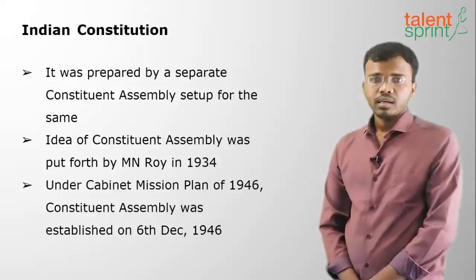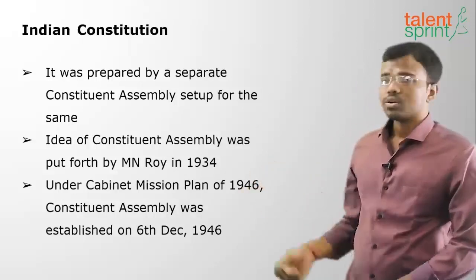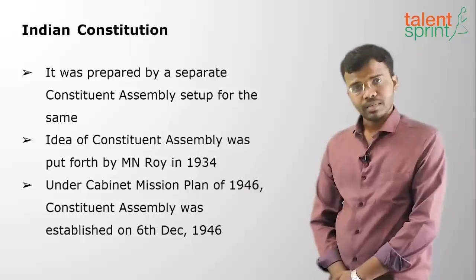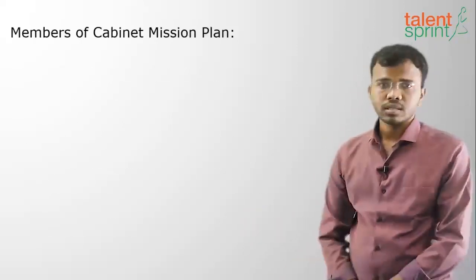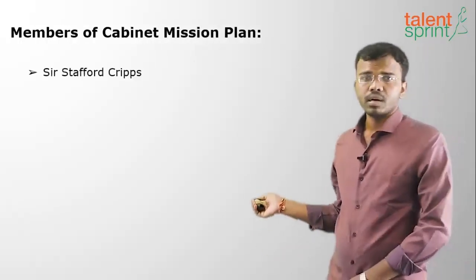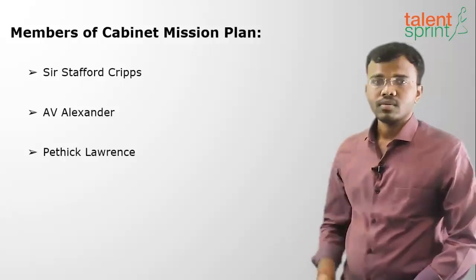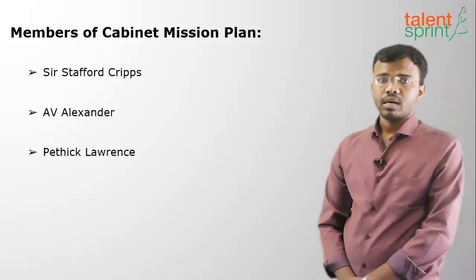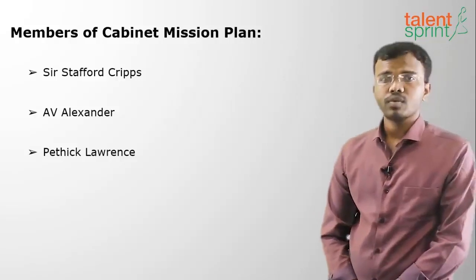Under the Cabinet Mission Plan in the year 1946, the Constitution was written under the Constituent Assembly. The three members of the Cabinet Mission Plan were Sir Stafford Cripps, Pethick Lawrence, and A.B. Alexander. Under this plan, the Constituent Assembly was formed with the work of writing a new Constitution for the coming independent India.